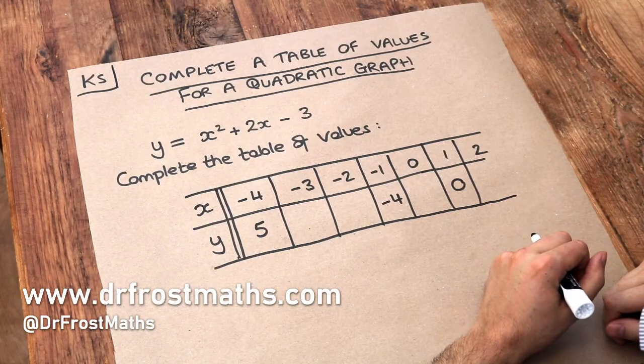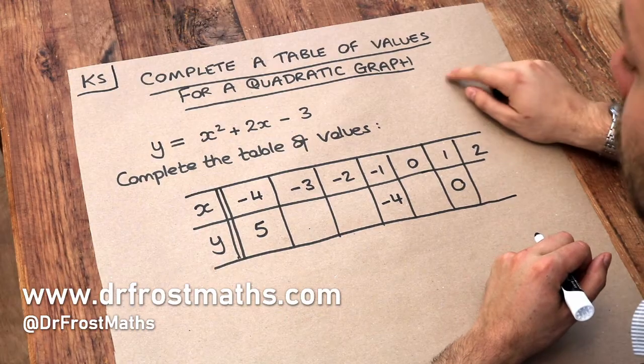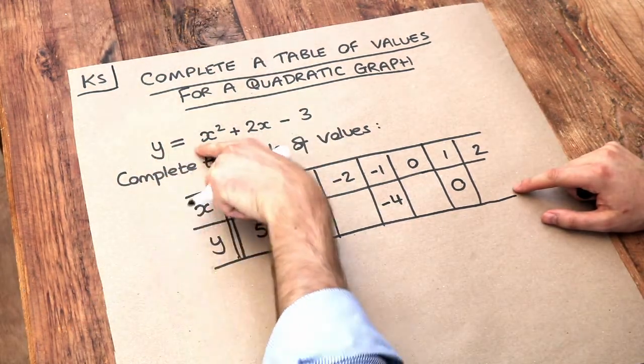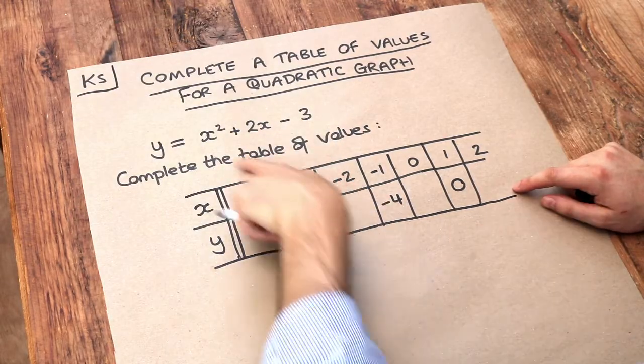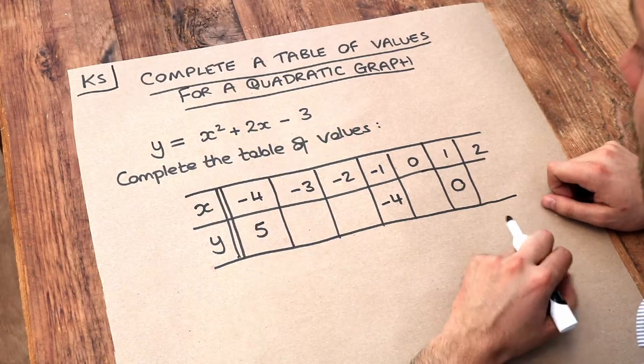Hello and welcome to this Dr. Ross-Math's key skill video on completing a table of values for a quadratic graph. We have an equation where y is in terms of x. This is known as a quadratic expression because the highest power of x is 2, with this x squared term.